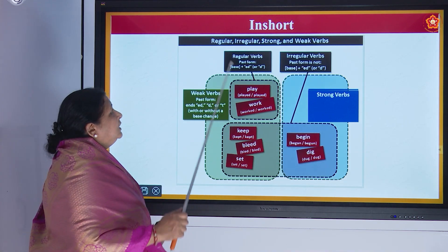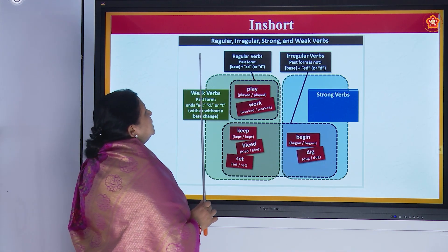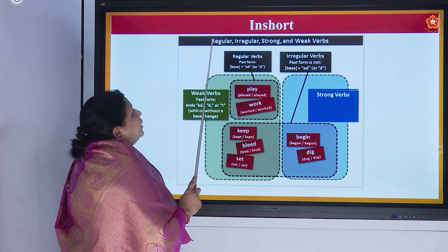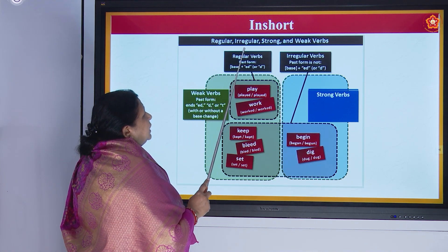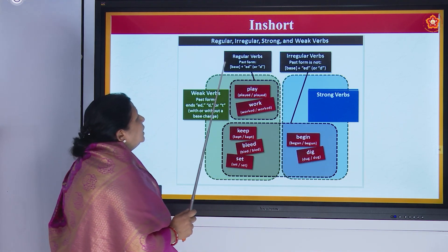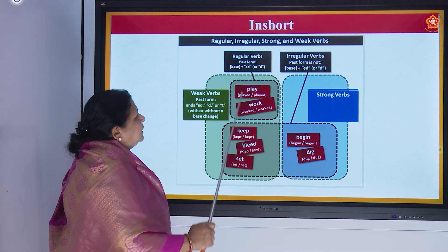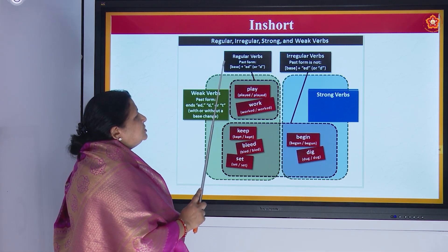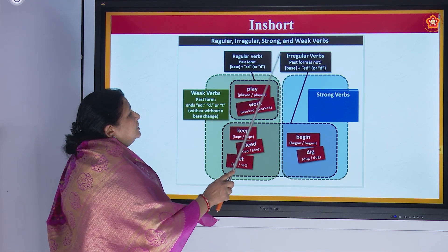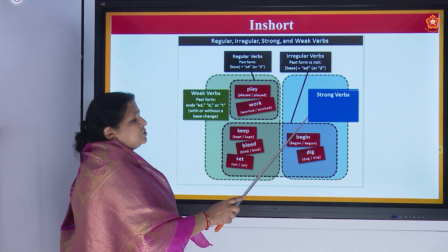Now let us see this chart. Earlier I had mentioned that I will be showing you a chart. Here we are going to learn about regular, irregular, strong and weak verbs. The green colour shows the regular verbs and weak verbs, and this part will show the irregular verbs and strong verbs.